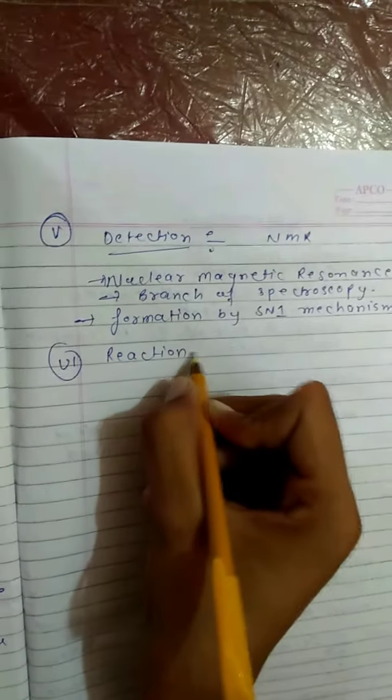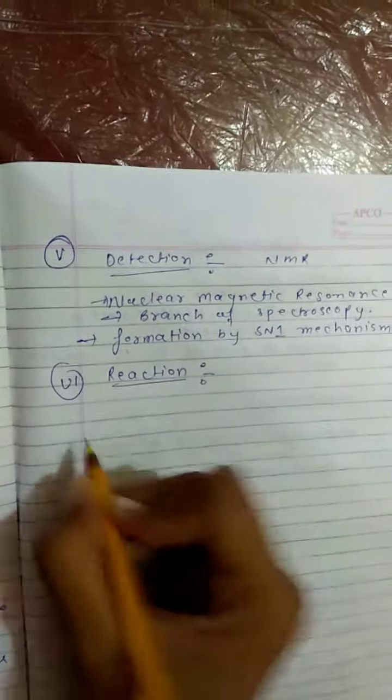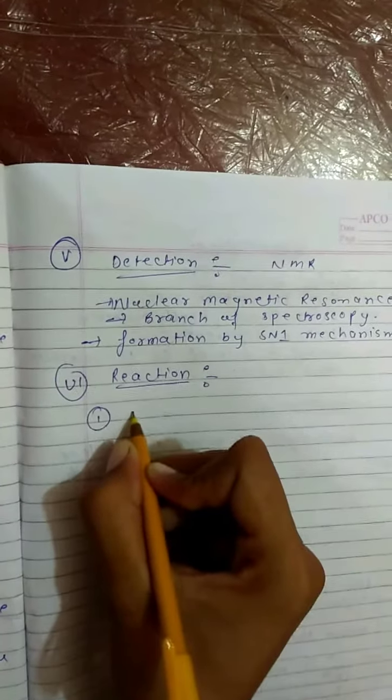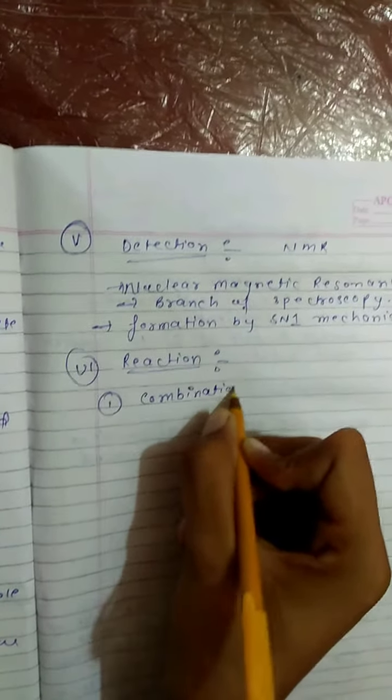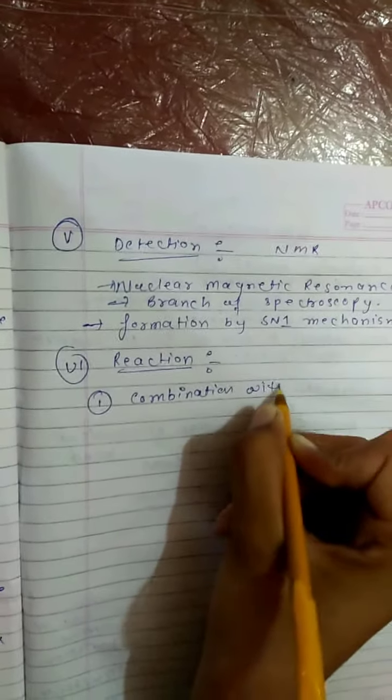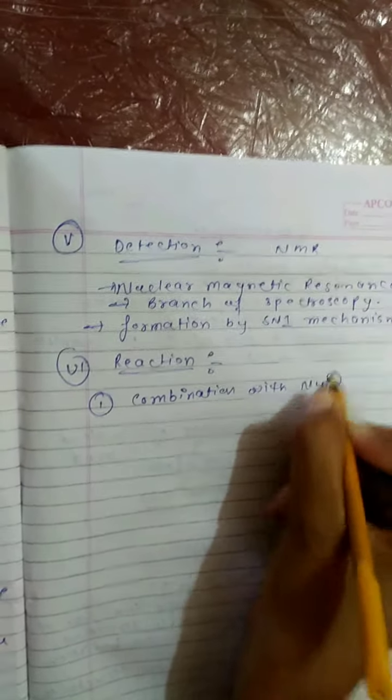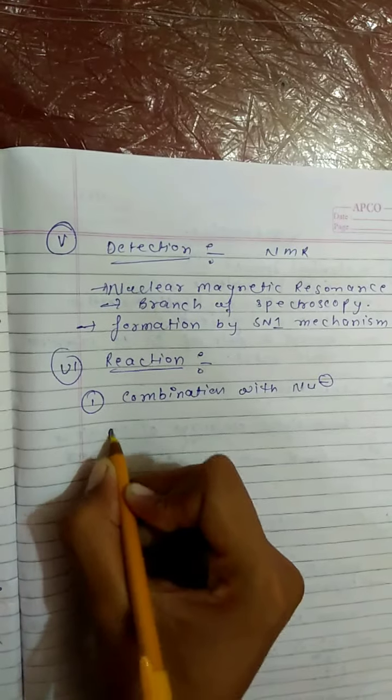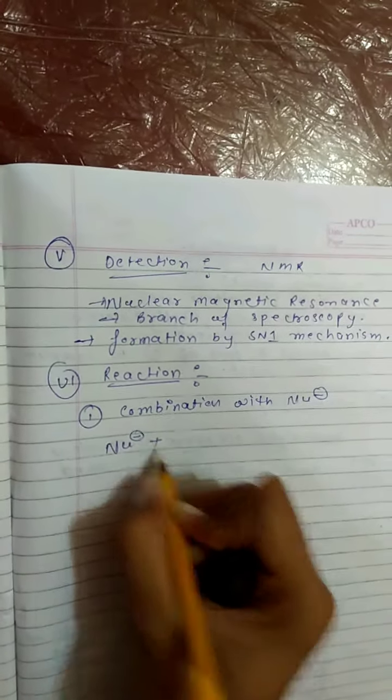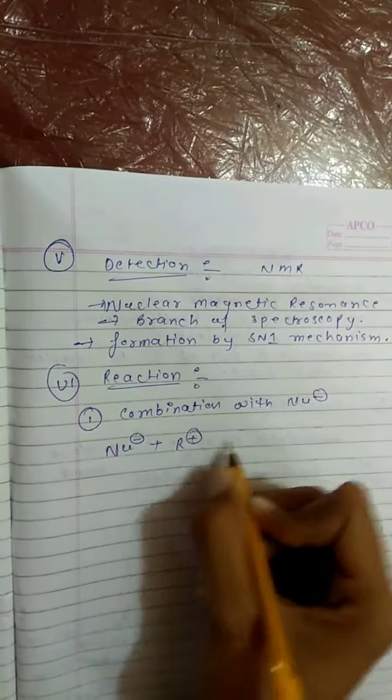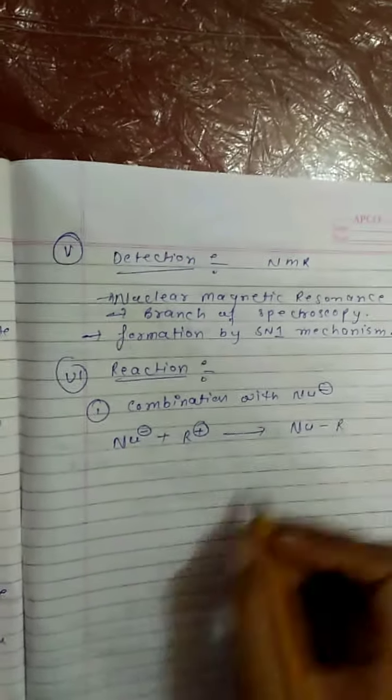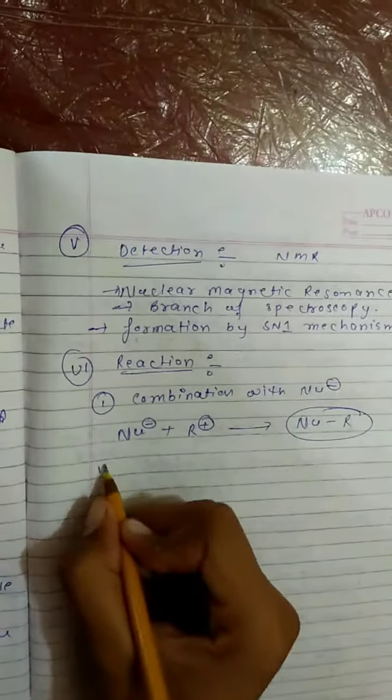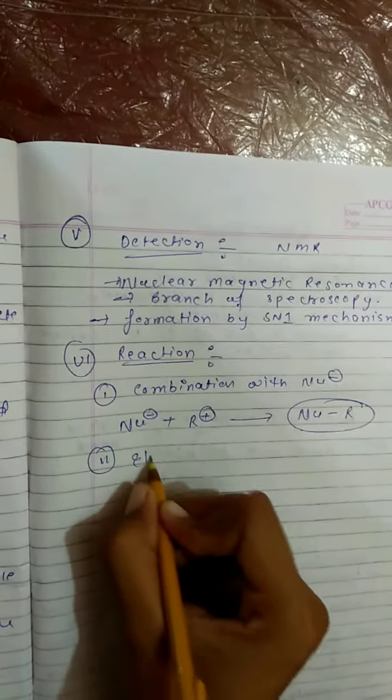Now the reactions of carbocation. First reaction: combination with nucleophile, SN1 reaction. When nucleophile reacts with carbocation, it forms a covalent bond.